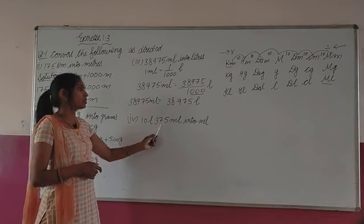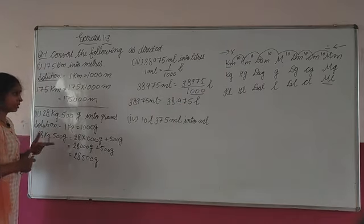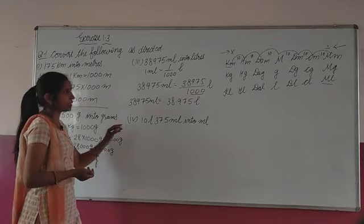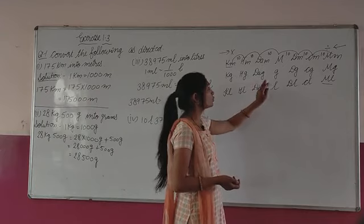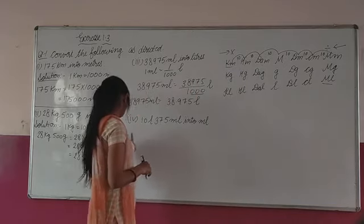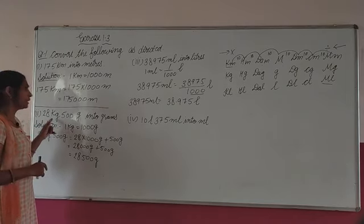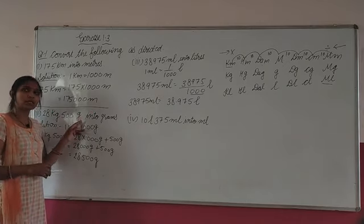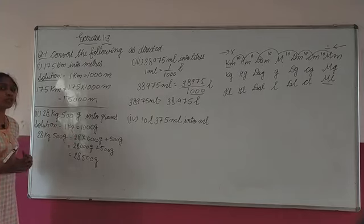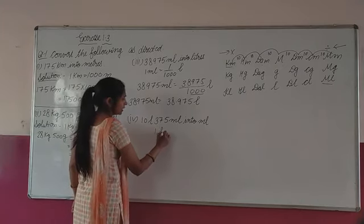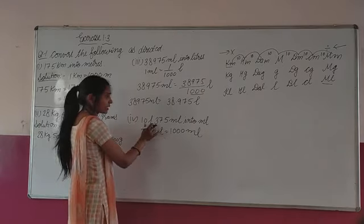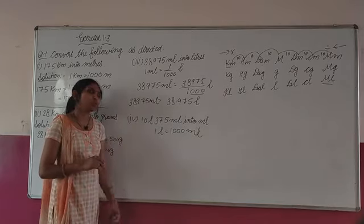Next question hai: 10 liters 375 milliliter into milliliter. Ab ye question same as second question jaisa hai. Yahan pe kilogram se gram tha; yahan pe liter se milliliter hai. Kilogram se gram kitne jump the? 1, 2, 3 — 1,000 se multiply kiya. Liter se milliliter kitne jump hain? 1, 2, 3 — yahan bhi 1,000 se multiply karna hai. 1 liter is equal to 1,000 milliliter. To 10 liter ko milliliter mein convert karo: 10 multiply 1,000 = 10,000, plus 375. This part you have to try yourself.